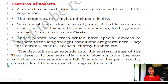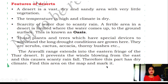The Aravalli range extends into the eastern fringe of the Thar Desert. It prevents the winds blowing from the east, and this causes scanty rainfall. Therefore, this part has a dry climate. Find this area on the map and mark it.